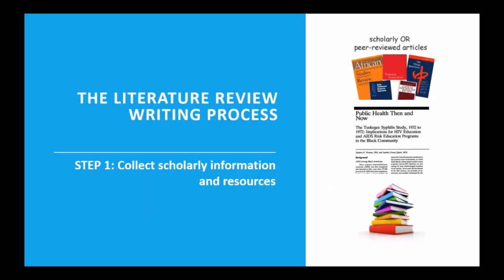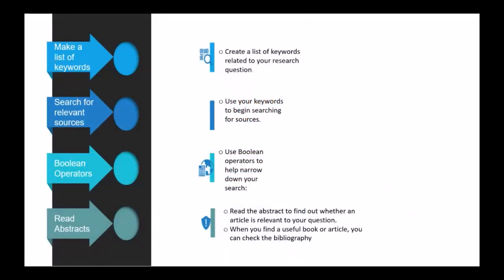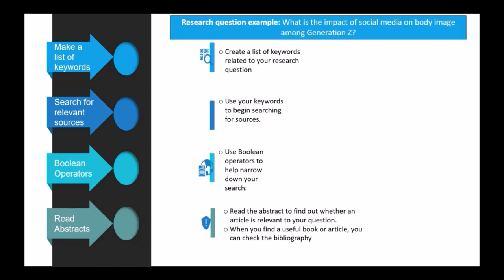Now we start with the literature review writing process. You are going to collect resources and information from various sources. The best way to start is to make a list of keywords for your study. What is your literature going to cover? Look at your title — it will guide you.